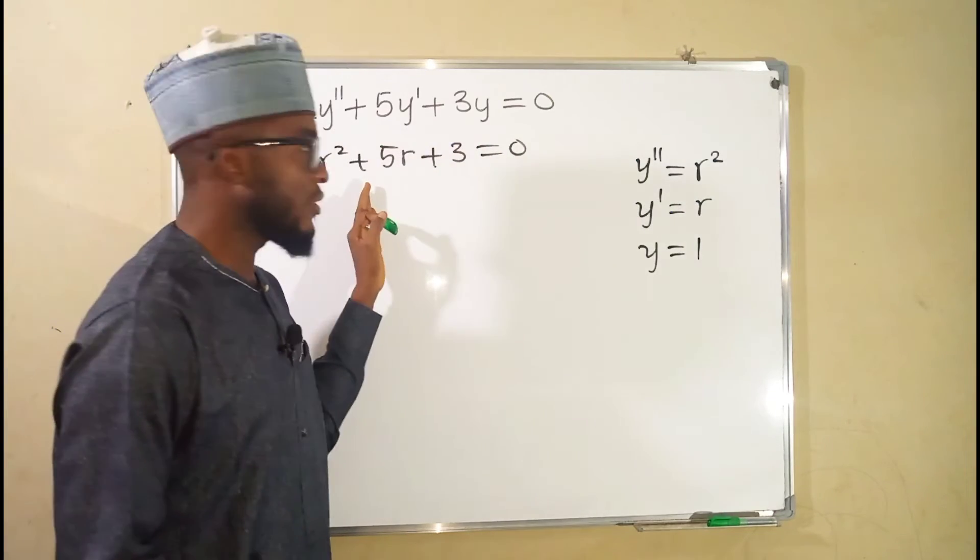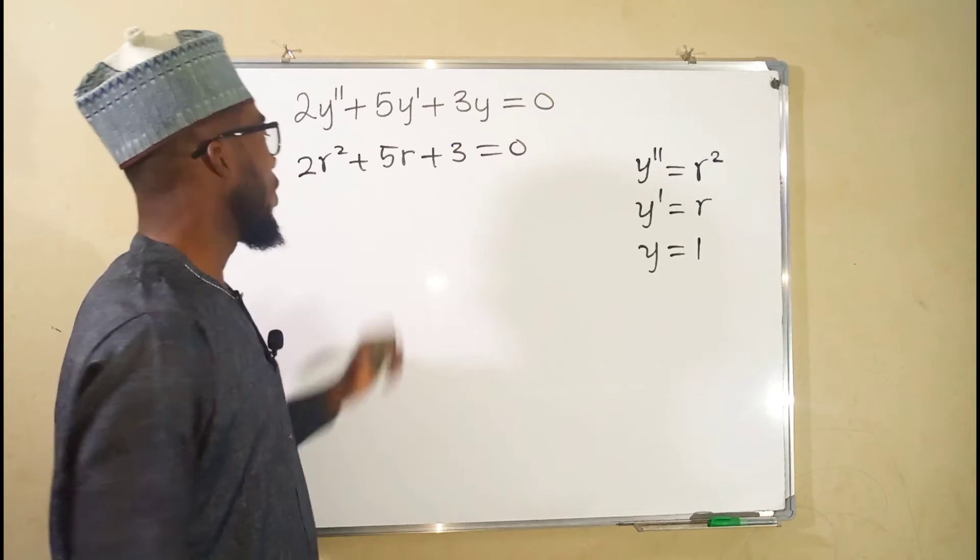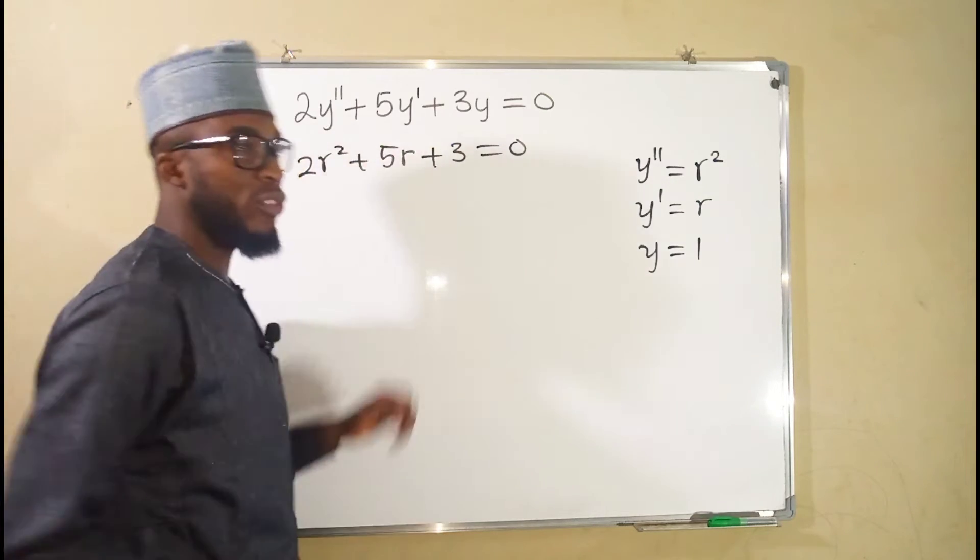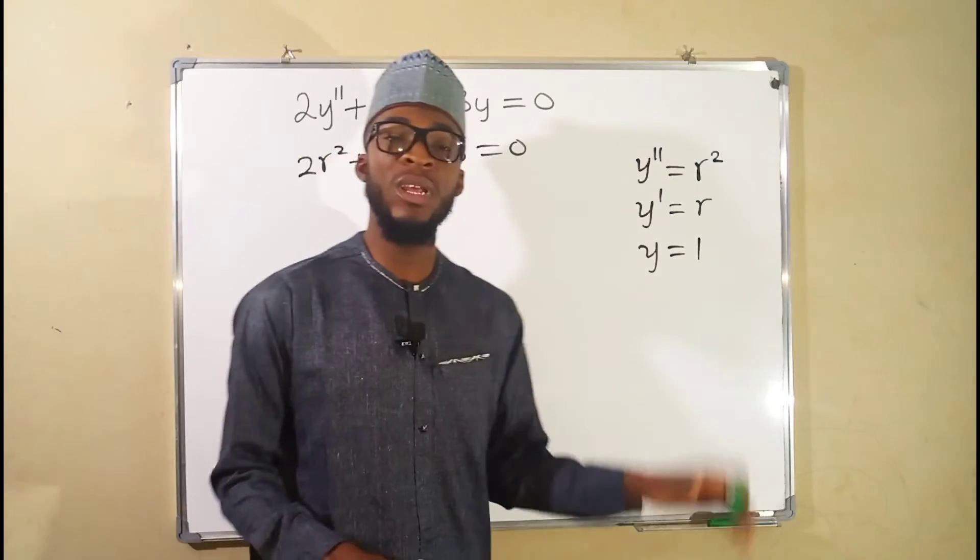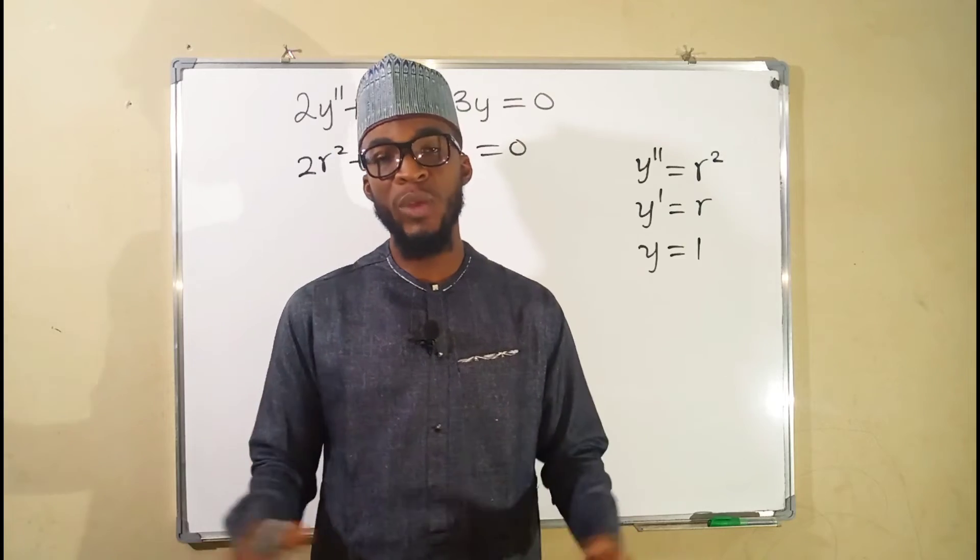This is in the form of a quadratic equation. We are going to solve for r, which is the root of the quadratic equation. The nature of that root will determine the form of general solution we are going to obtain.